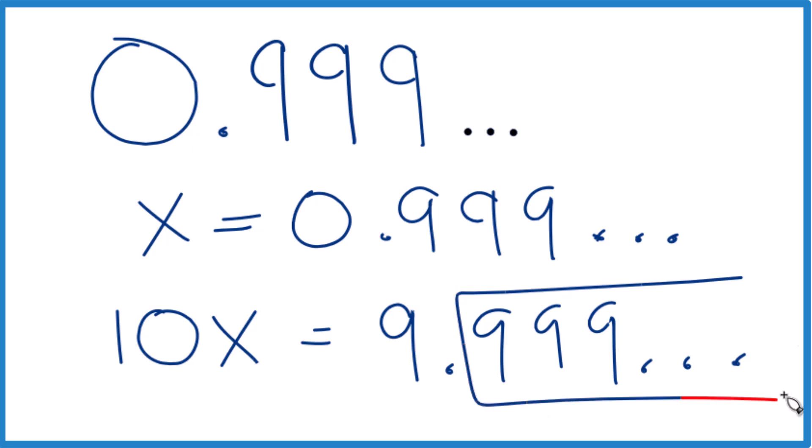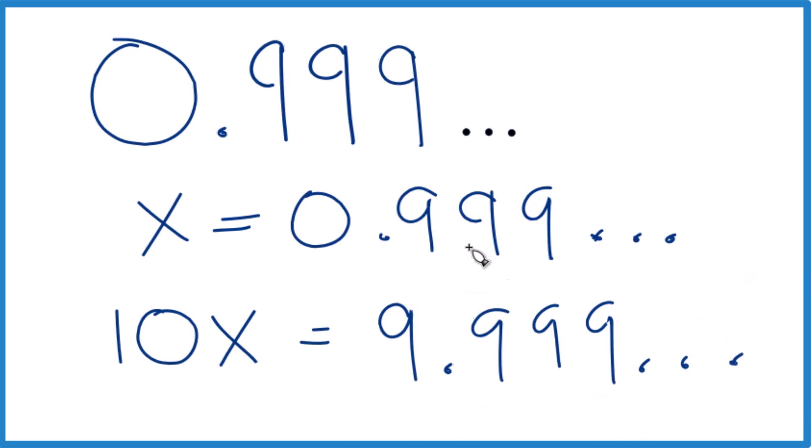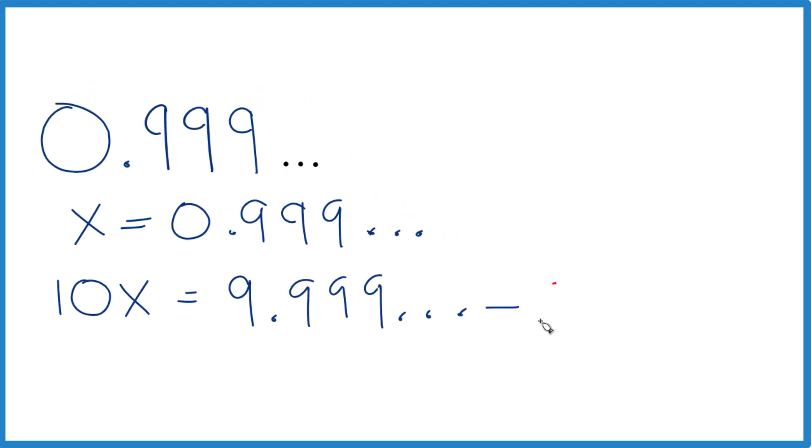If we could just get rid of this part here, we'd have all whole numbers. That'd be kind of nice. So let's just subtract 0.999, and when we do that, we have to do it to this side as well. So we subtracted 0.999 repeating here. We need it over here as well.